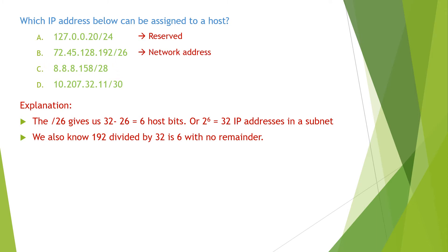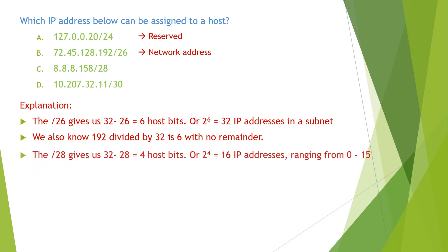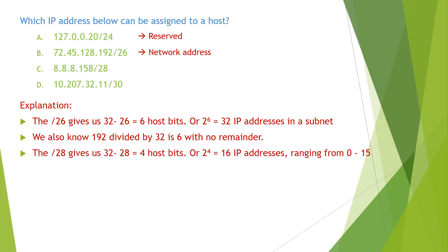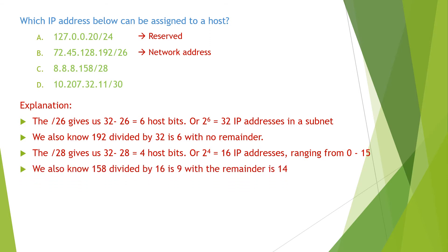For the next address, the slash 28 gives us 4 host bits or 16 IP addresses ranging from 0 to 15. We also know 158 divided by 16 is 9 with a remainder of 14, and 14 is within this range.